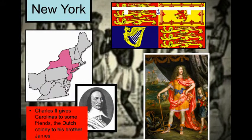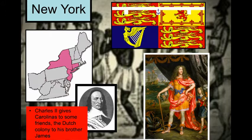Remember that New York is going to be established, as well as the Carolinas. Charles II is going to give the Carolinas to his friends, and the Dutch colony — which used to be New Amsterdam and is now New York — he's going to give to his brother James. This is kind of how colonies worked as royal colonies: who are my friends, who do I want to give this to?